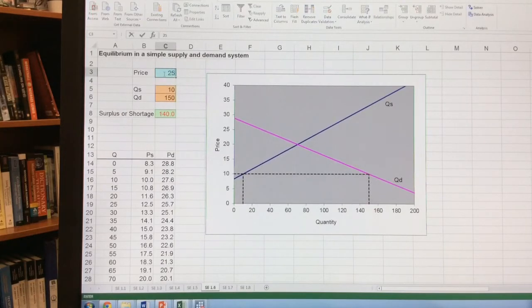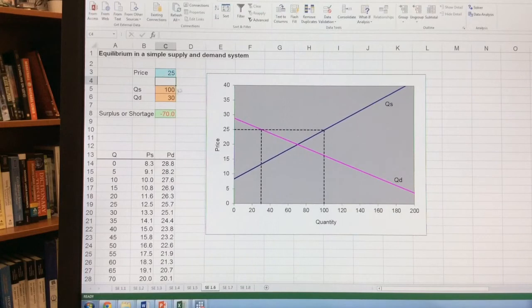Let's adjust the price to $25. At $25, only 30 individuals will demand the good. Meanwhile, 100 individuals will want to supply the good. Therefore, we'll have a surplus of 70 or a shortage of negative 70.